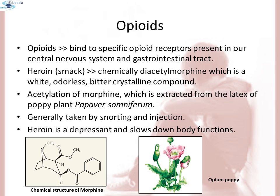Opioids are drugs which bind to specific opioid receptors present in our central nervous system and gastrointestinal tract. Heroin, commonly called smack, is chemically diacetylmorphine — a white, odorless, bitter, crystalline compound. It is obtained by acetylation of morphine, which is extracted from the latex of the poppy plant Papaver somniferum. Generally taken by snorting and injection, heroin is a depressant and slows down bodily functions. Here you can see the chemical structure of morphine and the opium poppy plant.